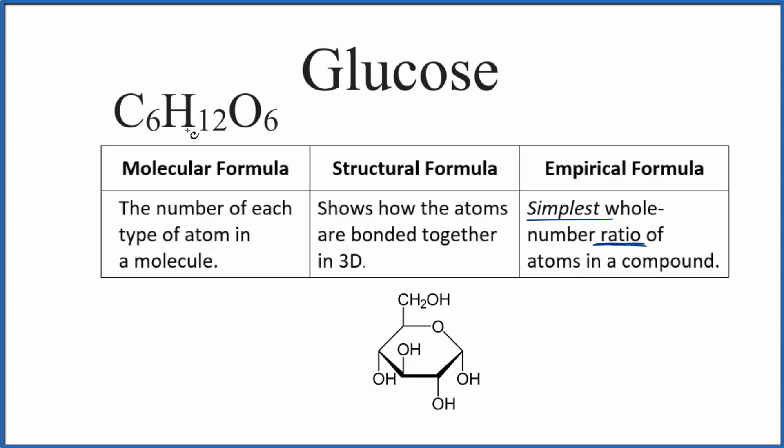We just divide each of these numbers by 6, and that gives us C1H2O1 as the empirical formula for glucose. We don't usually write the 1 though, so the empirical formula would end up being CH2O.